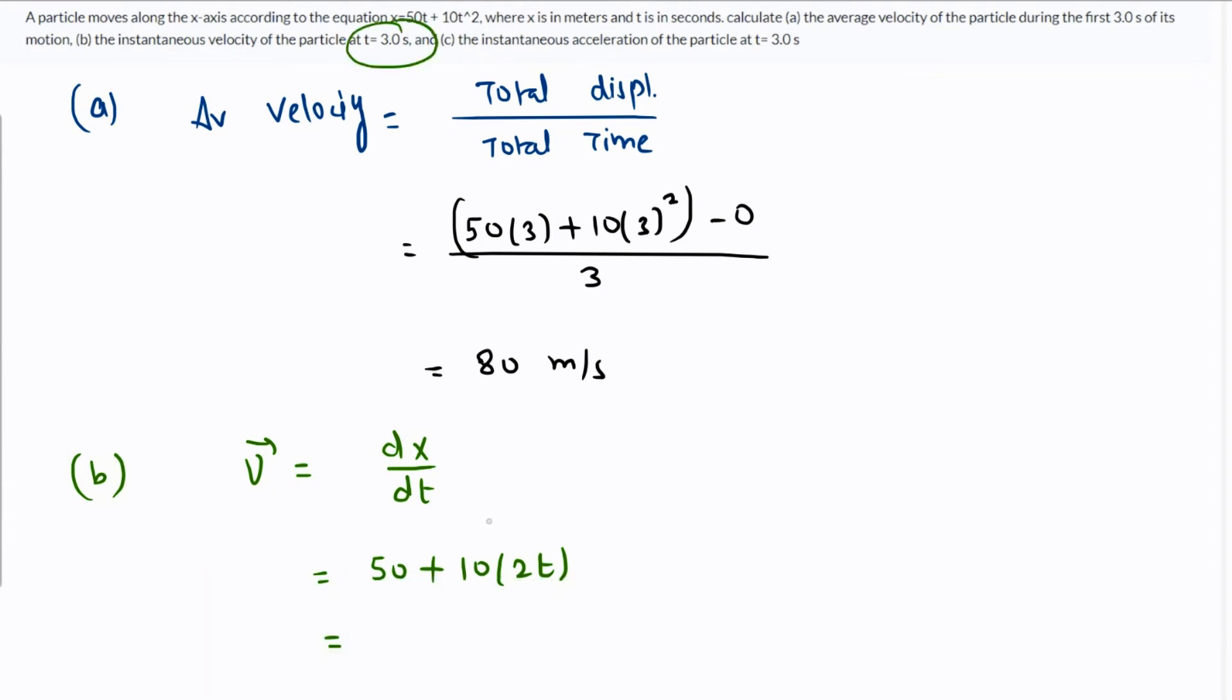We have to find this at t=3, so we substitute 3. Three times 2 is 6, 6 times 10 is 60, 60 plus 50 is 110 meters per second. Finally, for acceleration...